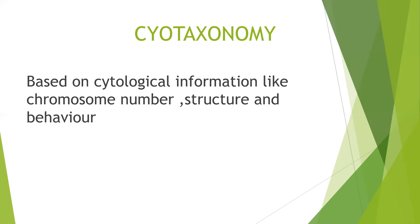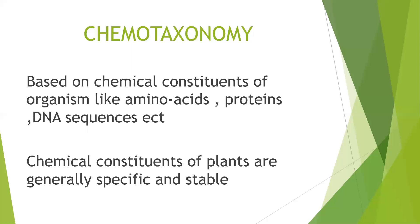There is another type of taxonomy known as cytotaxonomy, which is based on cytological information — that is, chromosome number, structure of chromosomes, and behavior of chromosomes. And lastly, chemotaxonomy. This type of taxonomy is based on the chemical constituents of organisms, such as amino acids, proteins, and DNA sequences. The chemical constituents of plants are very specific and stable, so this type of classification is widely used in plants.